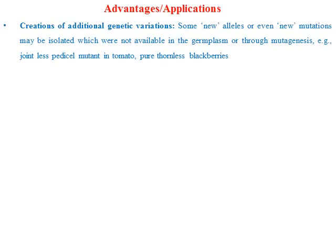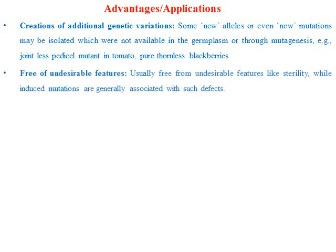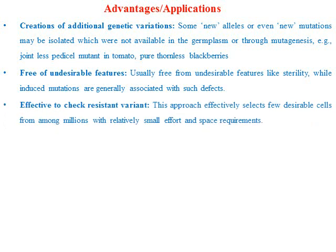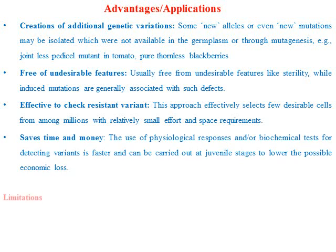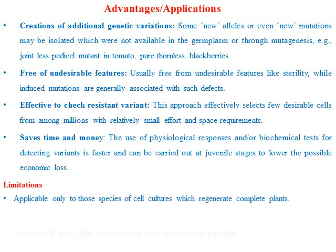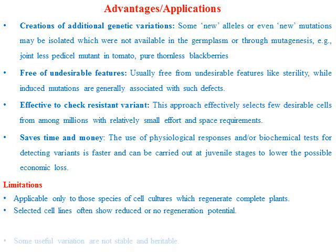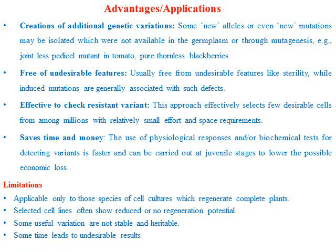Applications of somaclonal variation: first, it provides additional genetic variation. Somaclonal variations that are free of undesirable features are very effective for developing resistance varieties, and it saves time and money. However, there are limitations: it is only applicable to those species whose cells regenerate a complete plant. Some useful variations are not stable and not heritable — they do not transfer from F1 to F2 generation. And sometimes it leads to undesirable results.